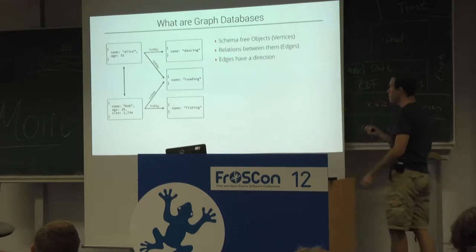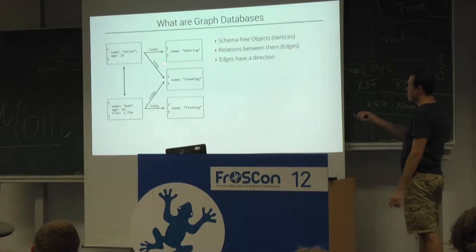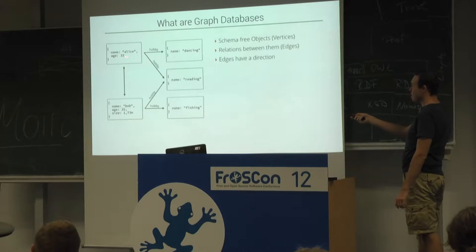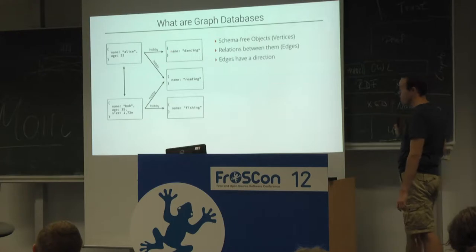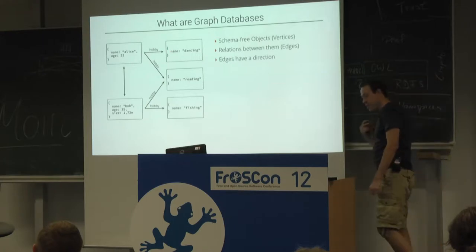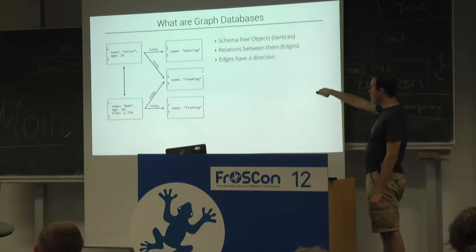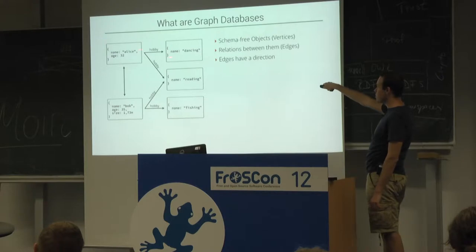One example is on the left-hand side. We have a couple of vertices — for example, this one has the attribute name Alice, age 32. We have a Bob over here, and we have a hobby over there. Those are the vertices. And then we have the relation, the connection between those — so for example, Alice has a hobby called dancing.